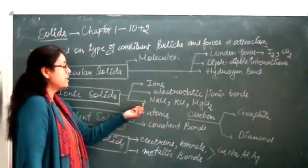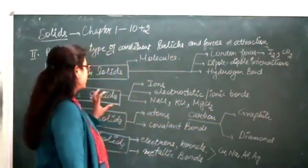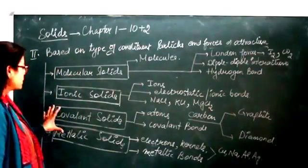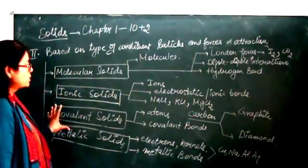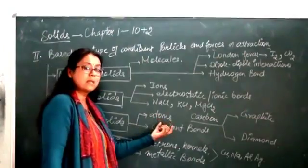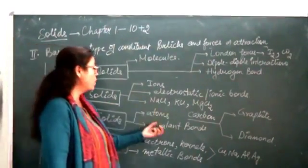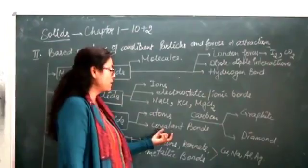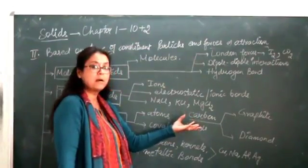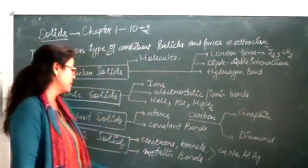Examples of ionic solids are NaCl, KCl, MgCl2 — all ionic substances come under this category. The third type is covalent solids. Covalent solids have atoms as their constituent particles, and the bonds present are covalent bonds. An example is carbon, with its two allotropes — graphite and diamond.